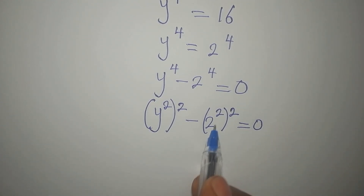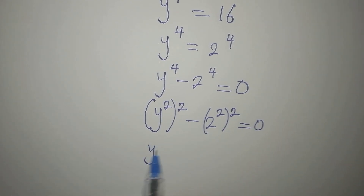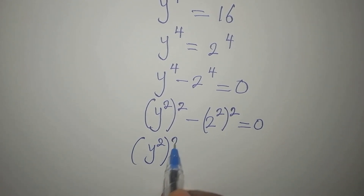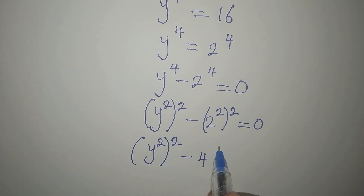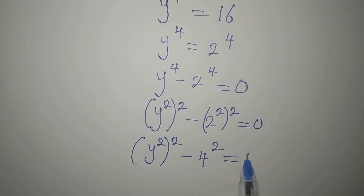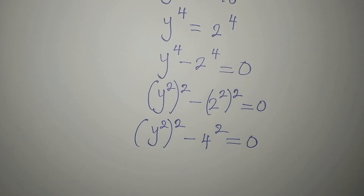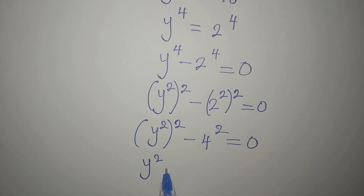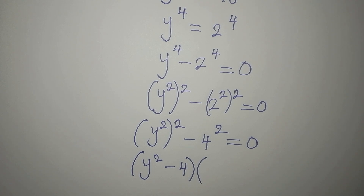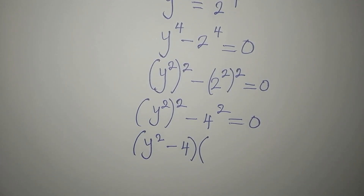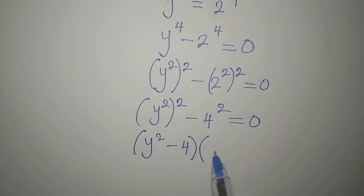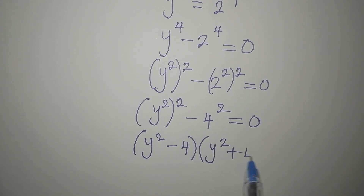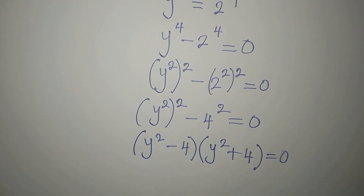We can work on this as y-squared squared minus 4 squared equals 0. Now, applying the difference of two squares, we're going to have y-squared minus 4 in one bracket, and in the other bracket y-squared plus 4, all equated to 0.